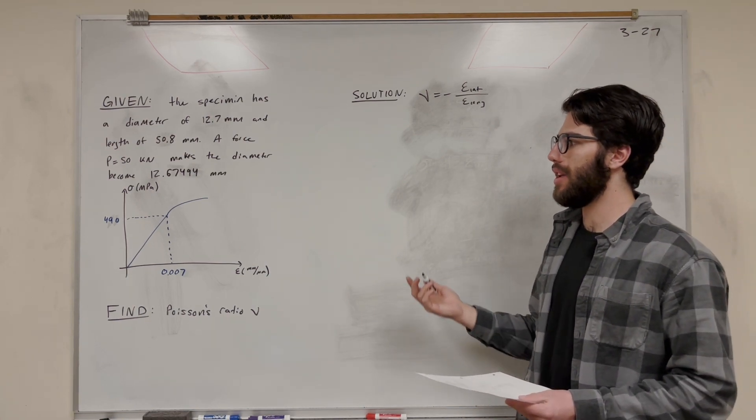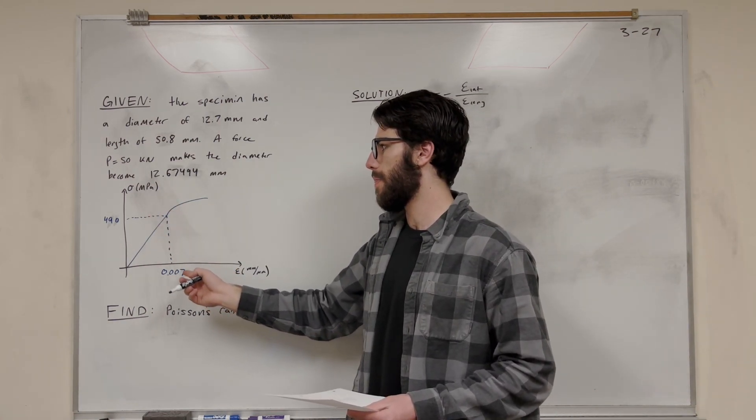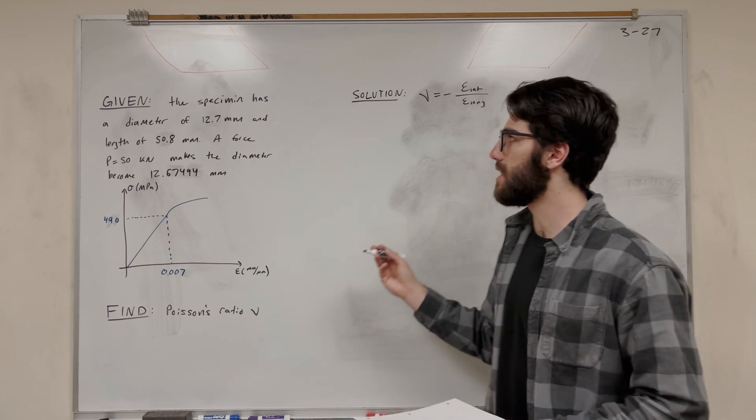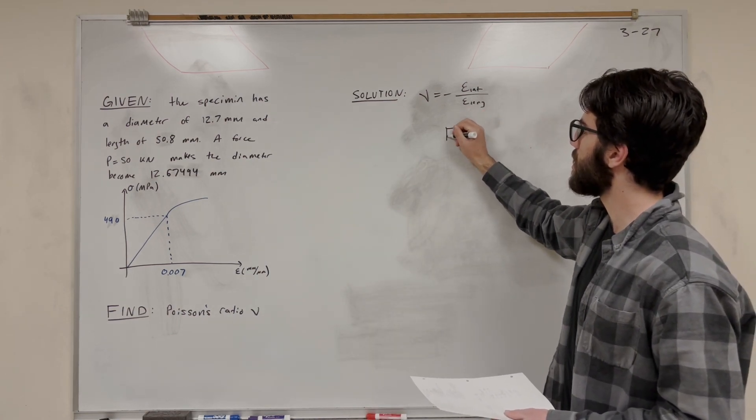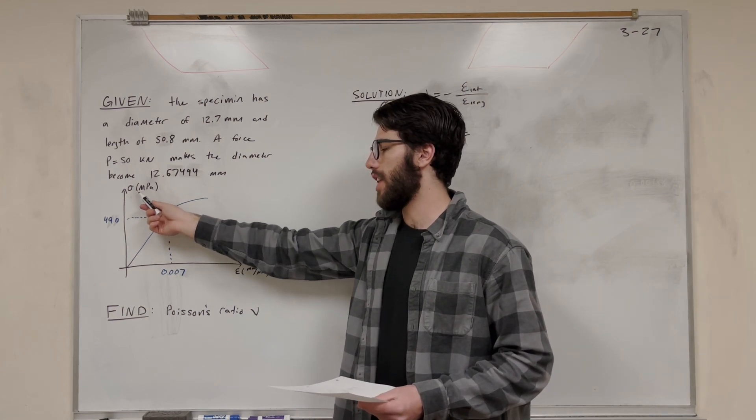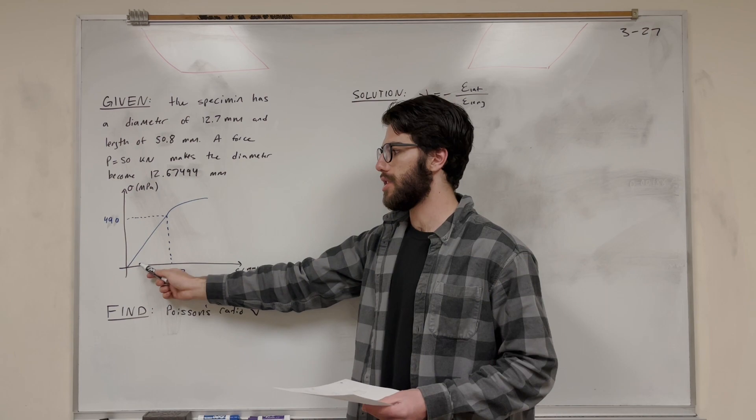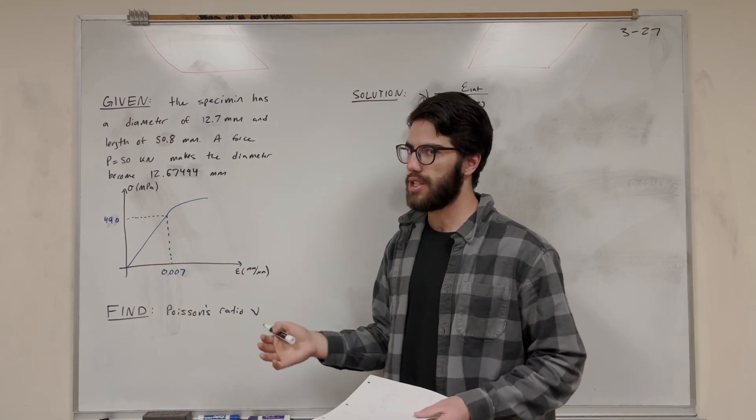So what we need to do first is we need to look at our stress-strain diagram. Stress-strain, we need to find the E, which is the modulus of elasticity. E is equal to the change in strain, or strain in stress or change in strain during this elastic period. So this linear line here, we need to find the slope of that.